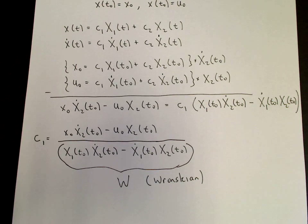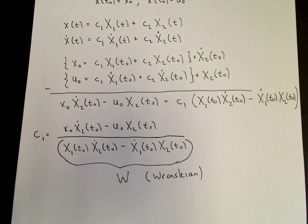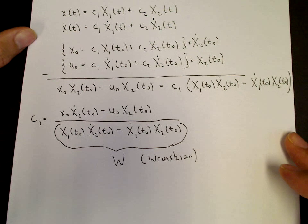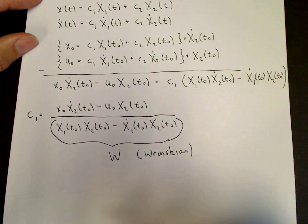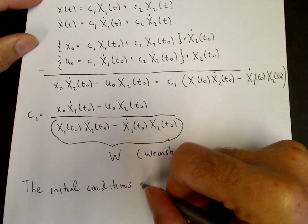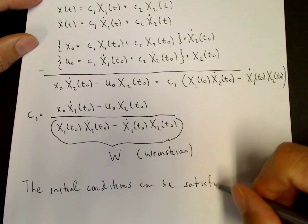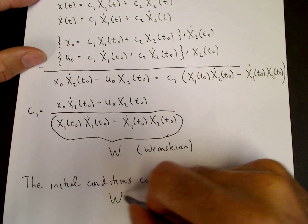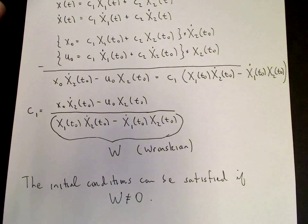So you can find in the equivalent equation for c2, you find that c2 also has W in the denominator. So looking at these equations for solutions for c1 and c2, we see that W cannot be 0. If W is 0, then there's no solution for c1 and c2. So the condition for c2 to have a solution, meaning that we can satisfy the initial conditions, is that the initial conditions can be satisfied if the Wronskian is not equal to 0.